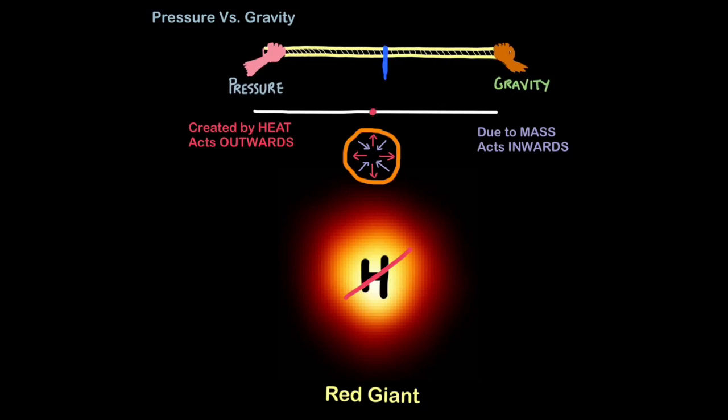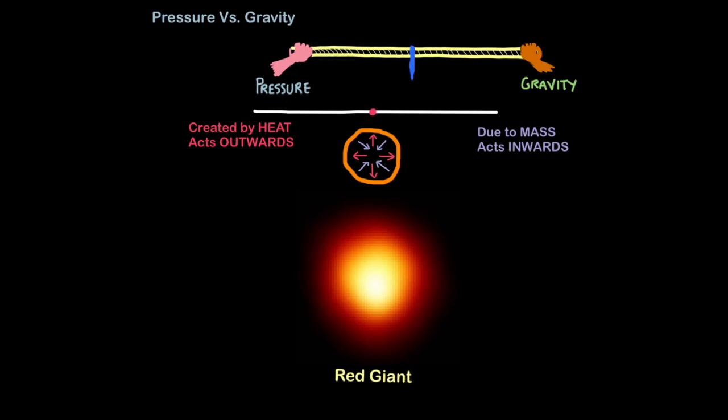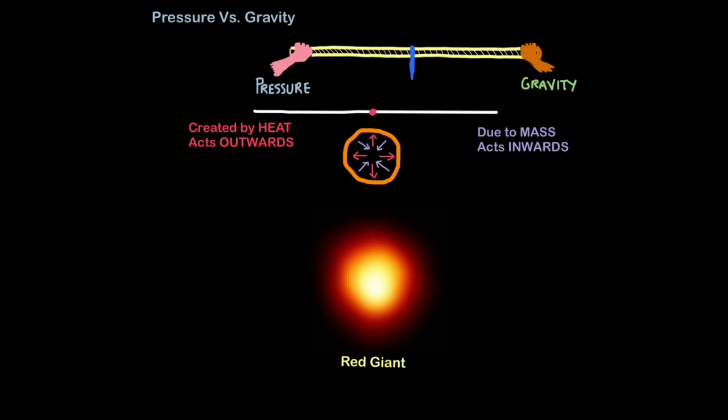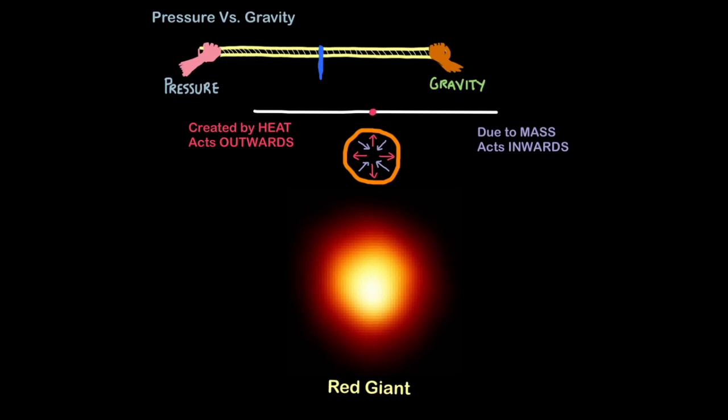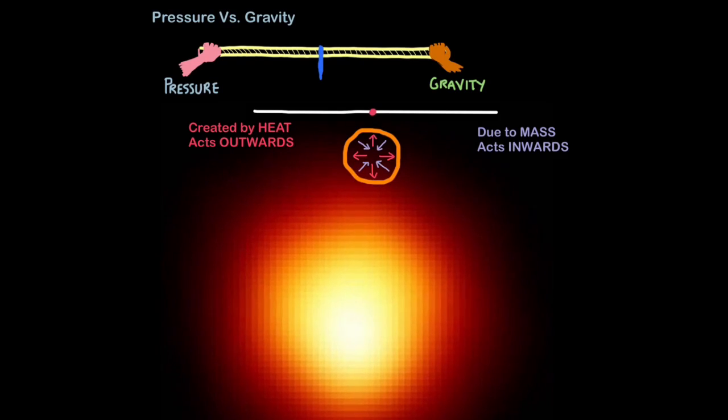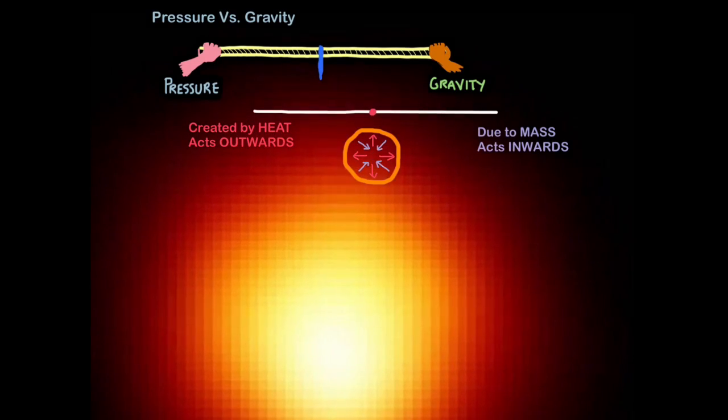As the core of the star contracts, the internal pressure of the star increases as helium atoms start to fuse. This generates more heat in the core and this heat ignites the hydrogen fuel in the outer layers of the star. As a result, the pressure in the outer layers of the star increase and it starts to expand. So a red giant stage is when the expansion of the outer layers causes the star to just get bigger and bigger.